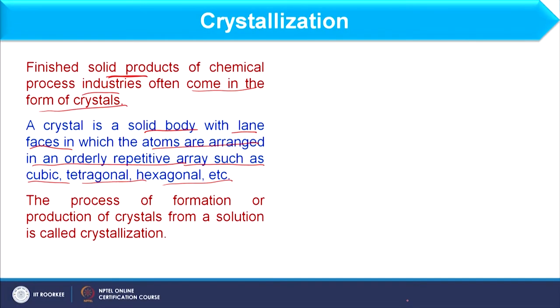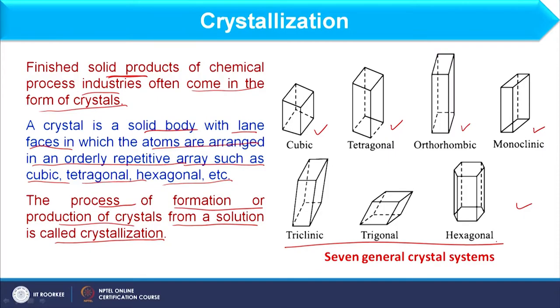Crystallization is the process of formation or production of crystals from a solution. When the feed is available it is in the form of solution, but the product is in the form of solid. We consider that as the crystallization process. There are several general crystal systems such as cubic, tetragonal, orthorhombic, monoclinic, and many others — these shapes are very definite.